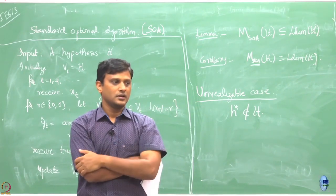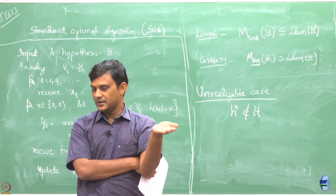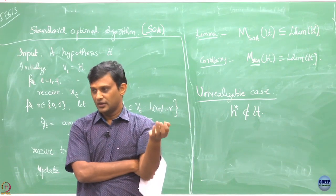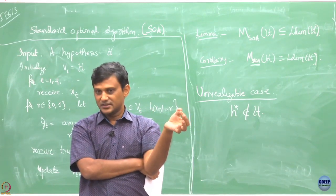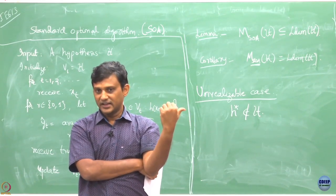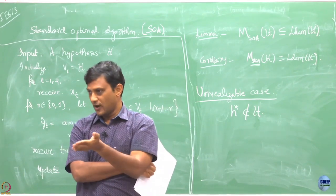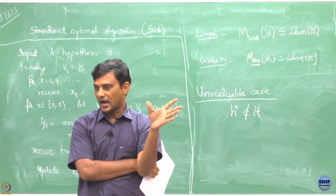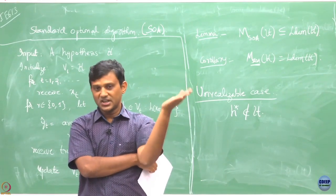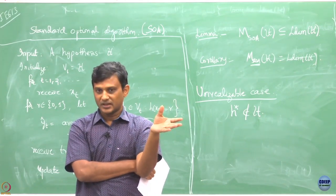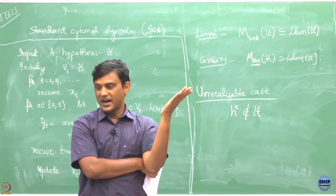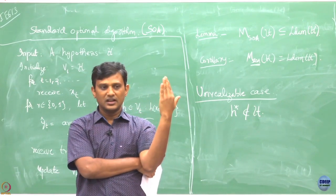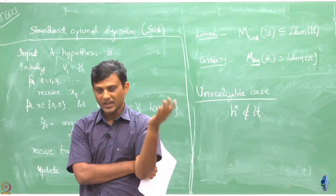Now, since H-star is not in my hypothesis class, what I would like to do is find which single hypothesis in my class, if I kept playing throughout, would have given me the smallest number of mistakes. I do not know a priori which one gives the minimum number of mistakes, but I want to do as close as possible to that.